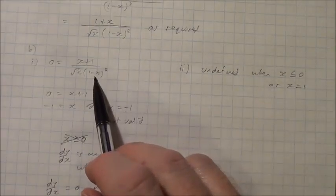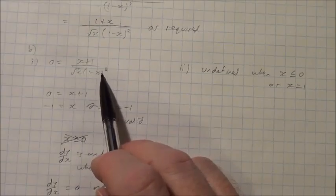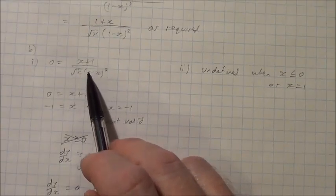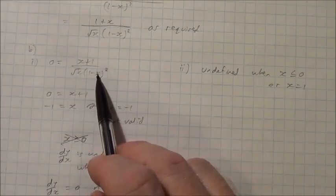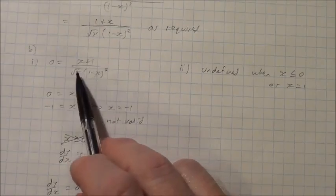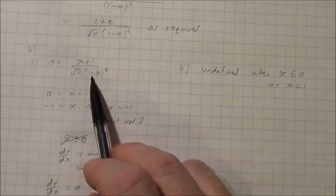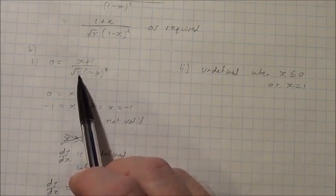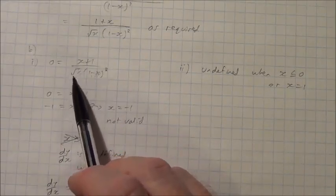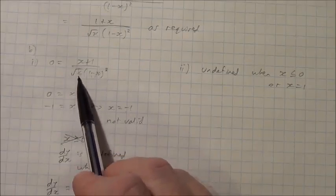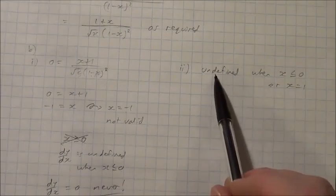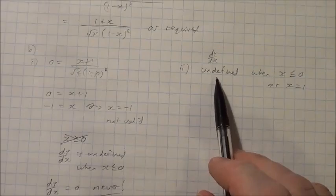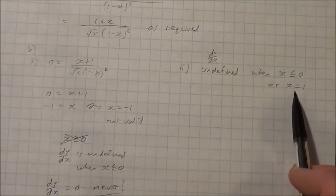Looking at where the denominator is 0, if I set x equal to 1, I see that 1 minus 1 is 0, and 0 squared is still 0, and 0 times root x gives 0, which means the derivative is undefined. Or when x is less than or equal to 0, when this is 0 or less than 0, that would be undefined. Therefore, dy/dx, the gradient function, is undefined when x is less than or equal to 0, or when x equals 1.